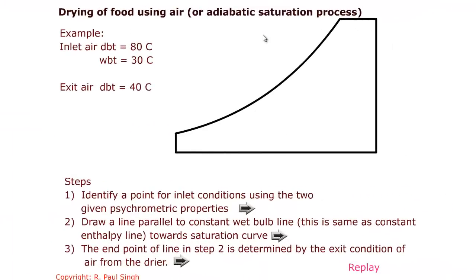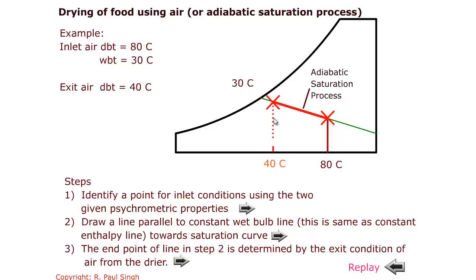Let's look at adiabatic saturation. Inlet air is at 80 degrees C dry bulb and wet bulb temperature of 30 degrees C, and exit air is at 40 degrees C. We identify a point with dry bulb temperature of 80°C and 30°C wet bulb, then follow the constant enthalpy line to the 40 degrees C dry bulb temperature. Thus we have identified the process with inlet conditions of 80°C dry bulb and 30°C wet bulb, going down to a lower dry bulb temperature of 40°C.